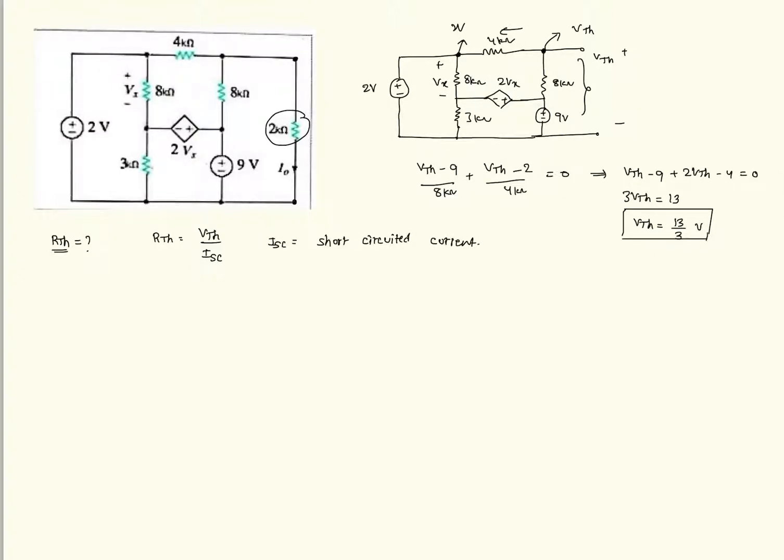Now let us short circuit this 2 kilo ohm resistance. So let us redraw the circuit now. This is 2 volts. This is 8. This is 3 kilo ohm. This is 4 kilo ohm. Here it is the dependent voltage source 2 Vx. Here it is the 8 kilo ohm resistor. Here it is the plus 9 volt.